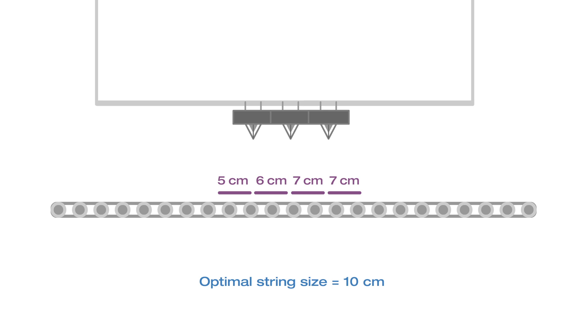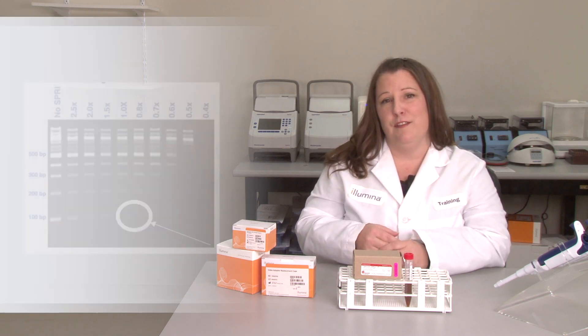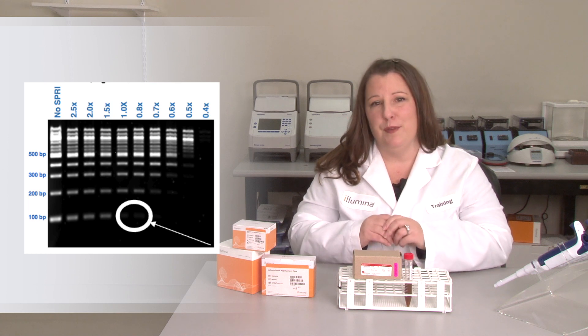Some of these pieces are well short of our desired 10 centimeter product. So what does that mean for the library prep? To remove primer and adapter dimers, the cleanup steps are designed to remove fragments below 200 base pairs. DNA that is too short will be removed, resulting in low or no yield.